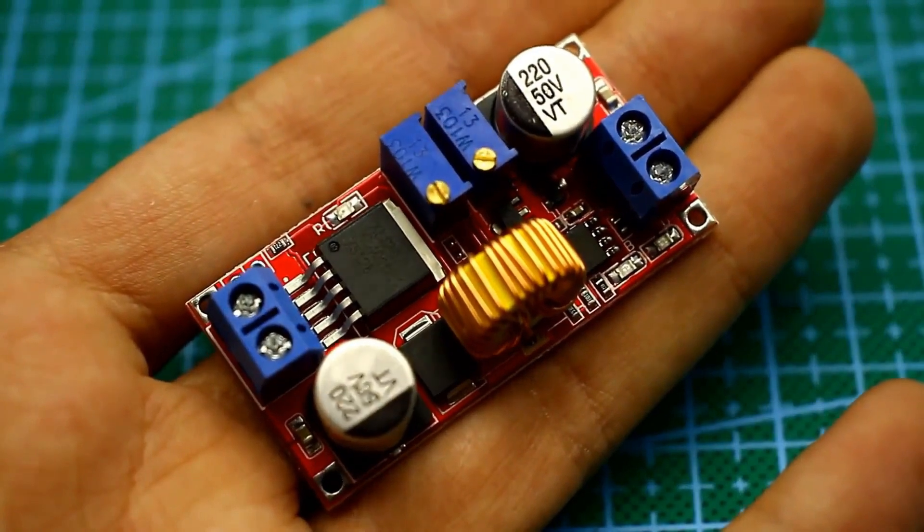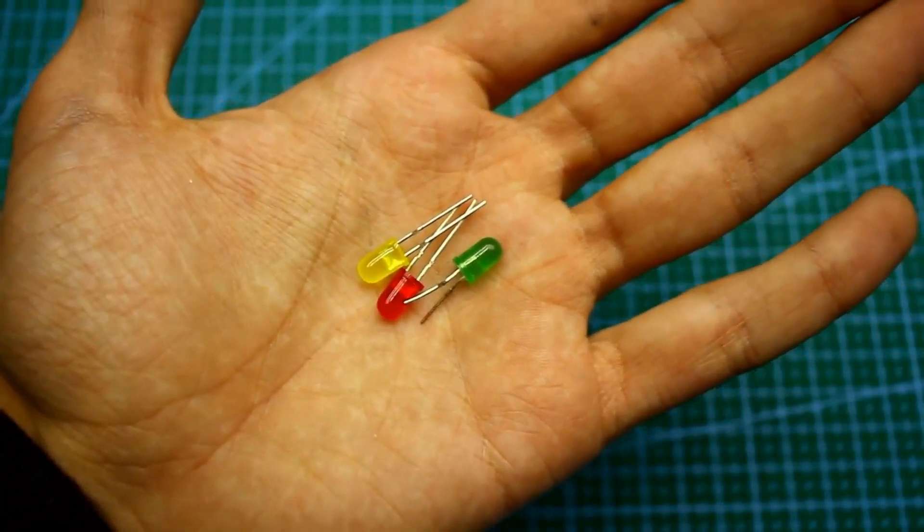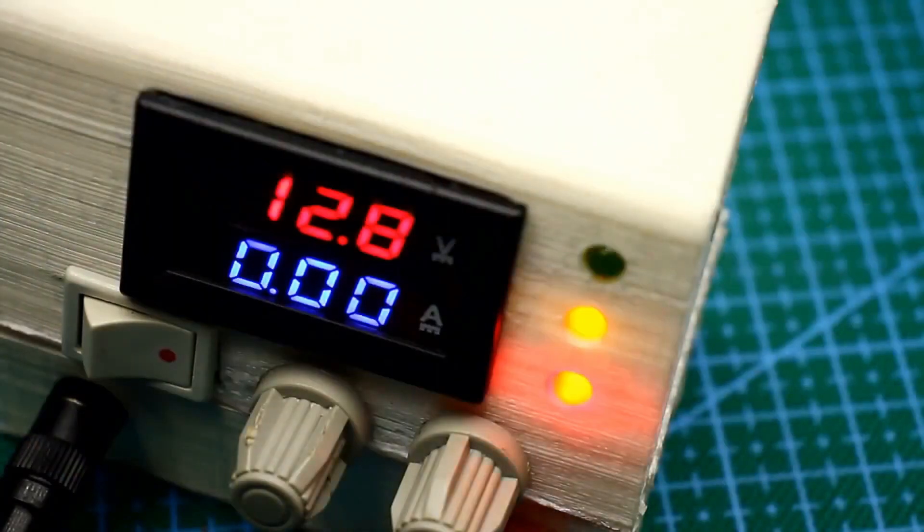The same goes for the SMD LEDs. I replaced them with regular 5 mm LEDs and brought them out to the front panel. However, the board itself was not modified.